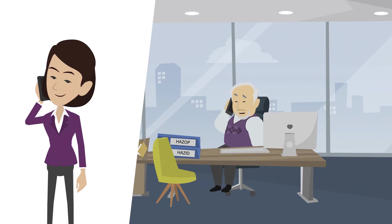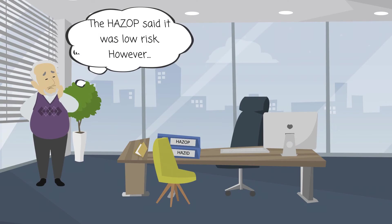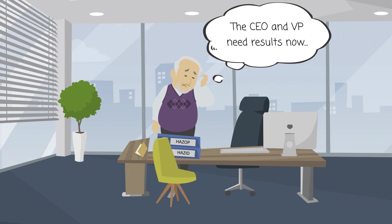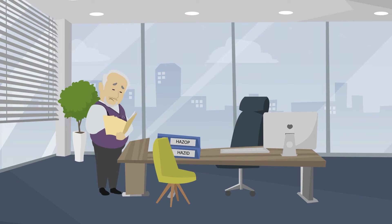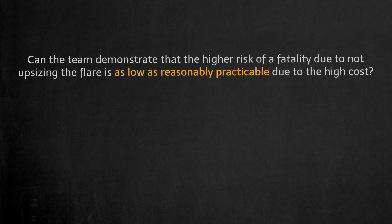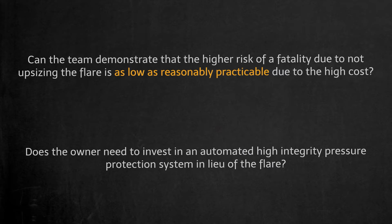We need to start up on time. If the HAZOP report said the risk is low, then I will sign off. It's not clear to me what low risk means, but it's the best information we have. I'll sign off on it to keep the project on schedule. Can the team demonstrate that the higher risk of a fatality due to not upsizing the flare is as low as reasonably practicable due to the high cost? Or does the owner need to invest in an automated high-integrity pressure protection system in lieu of the flare?